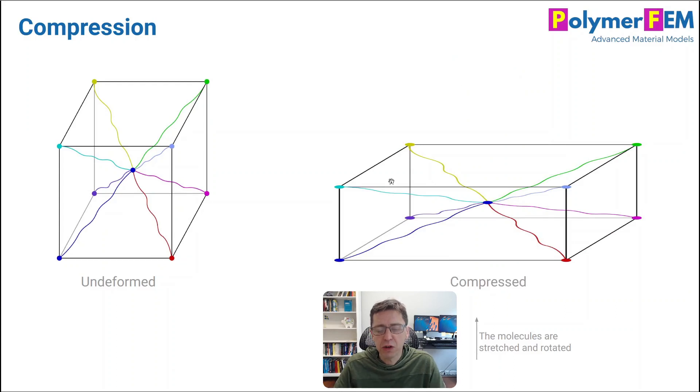What's interesting, though, is if you think about it in compression, if you take uniaxial compression, you take a specimen and you just squeeze it down, you pancake it. What happens then is, according to this theory, the molecules will be stretched out too, because this cube is stretched out.